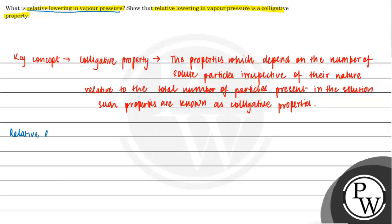The first part of the question is Relative Lowering of Vapor Pressure, so we define Relative Lowering of Vapor Pressure. It is the difference in the vapor pressure of the pure solvent and the solution.